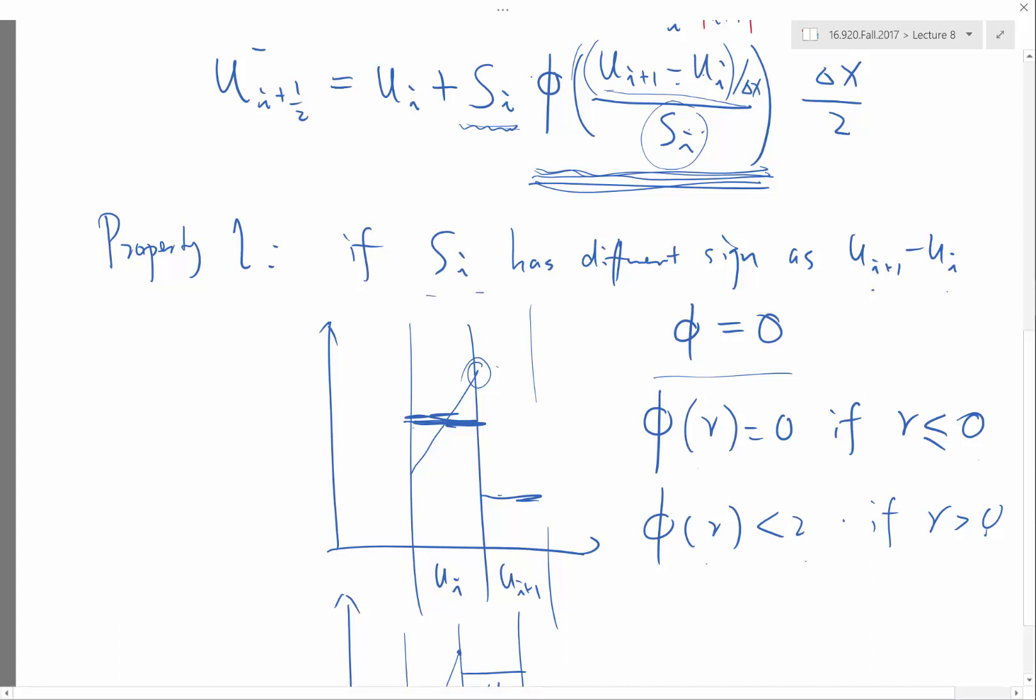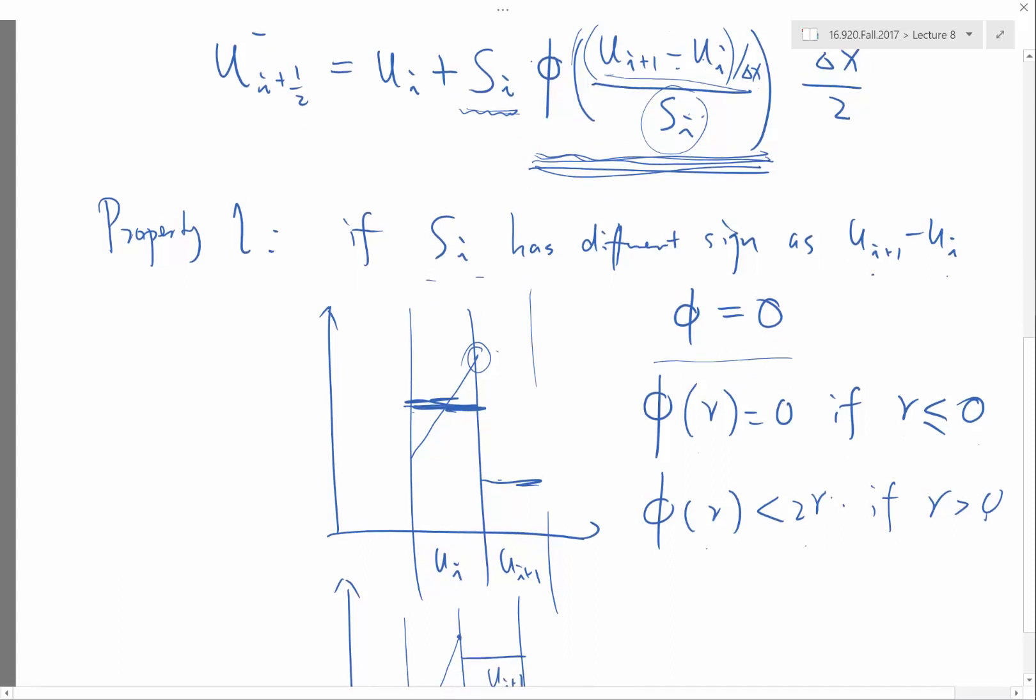I think it's 2r because, yeah. So this less than 2r means that S_i multiplied by phi is going to be less than 2 times